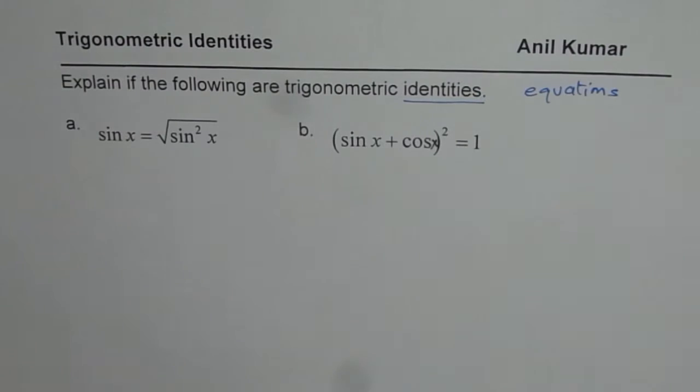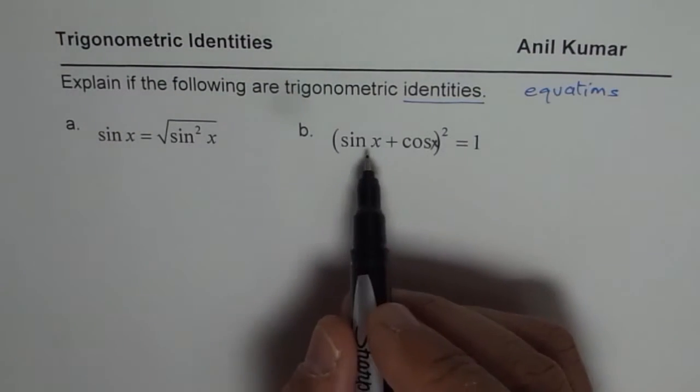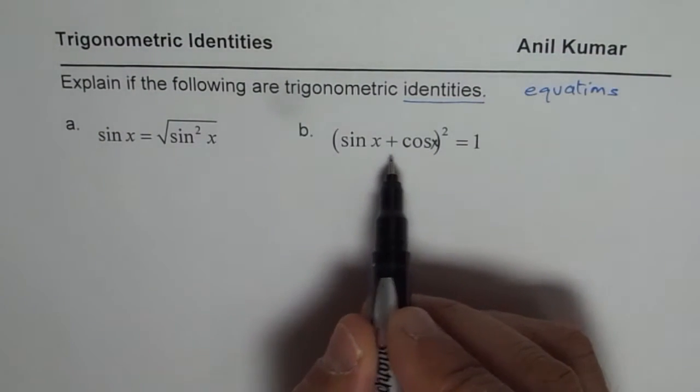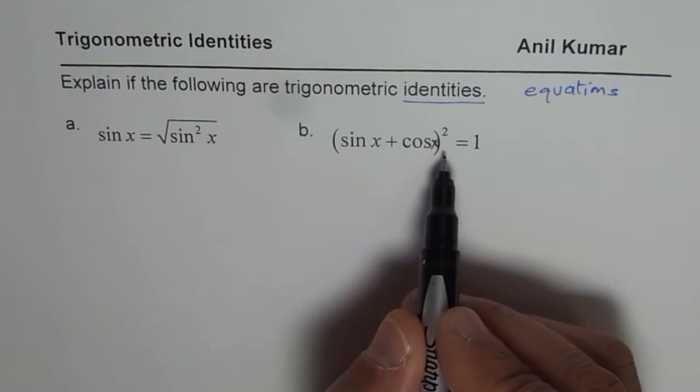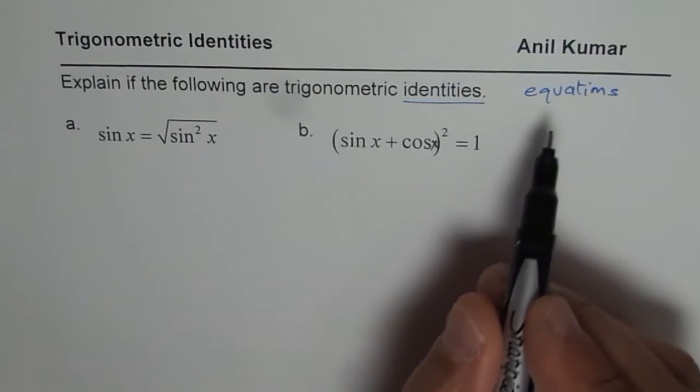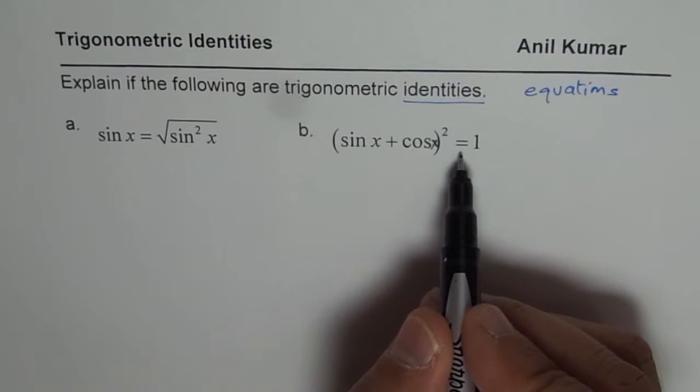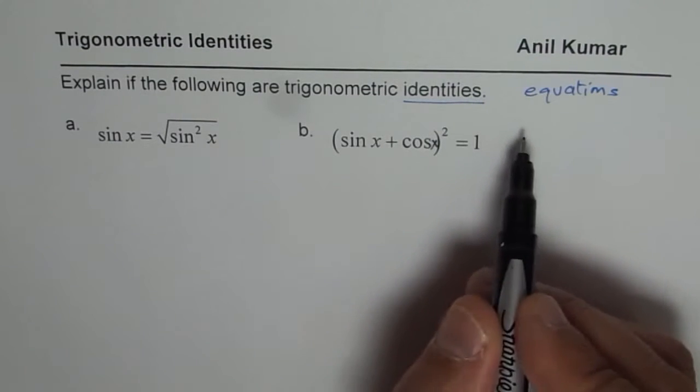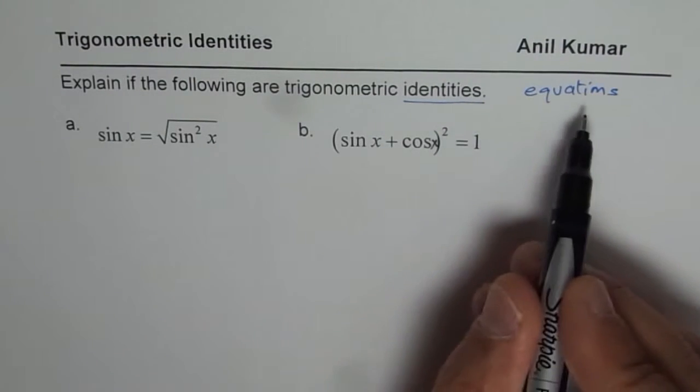If it is an identity, we have to prove that it should be true for the entire domain, that means all x values. If it is an equation, it will be true for some values, not all values. That is how we distinguish between equations and identities.